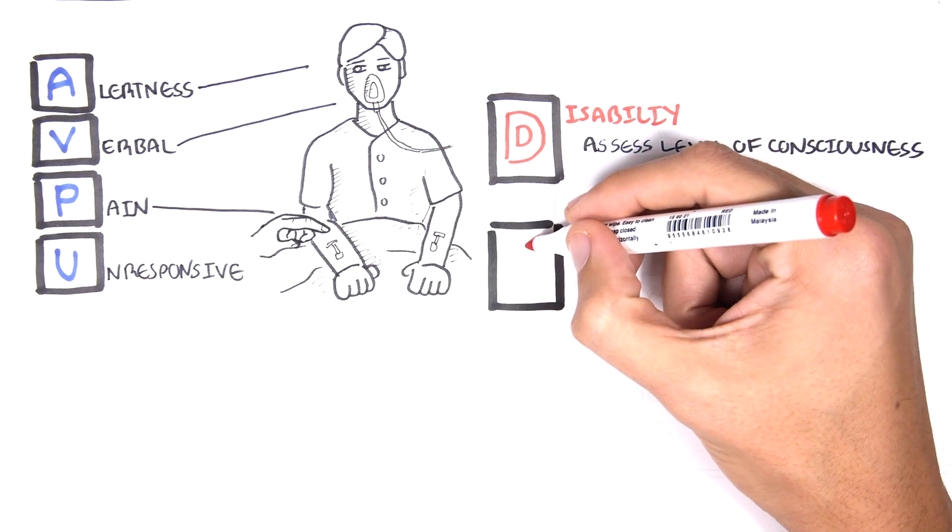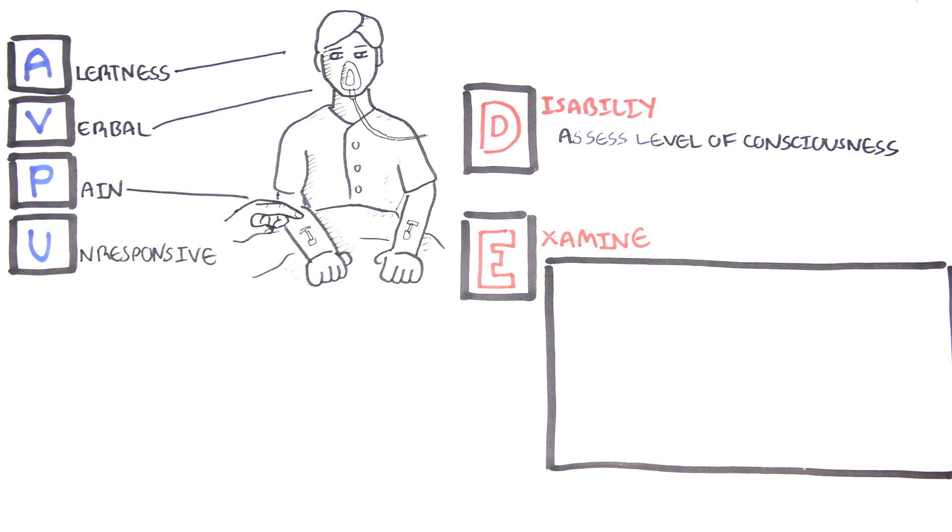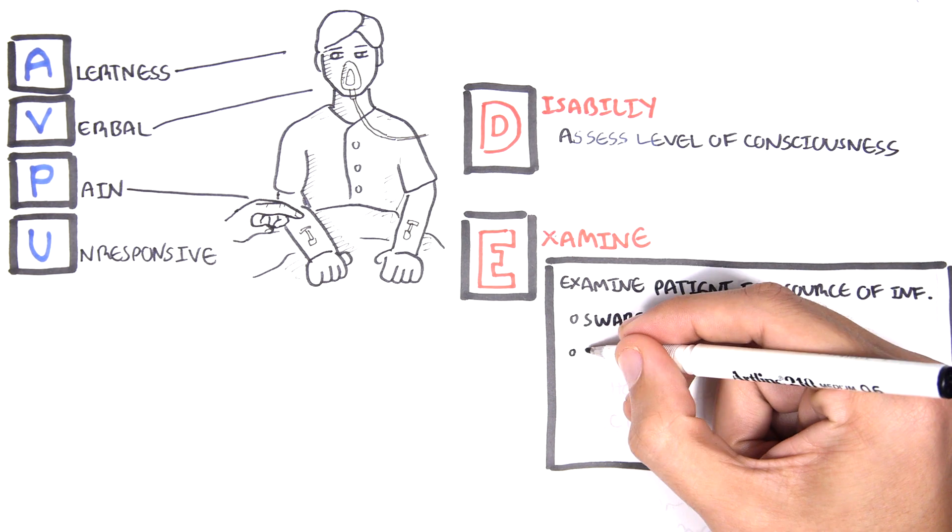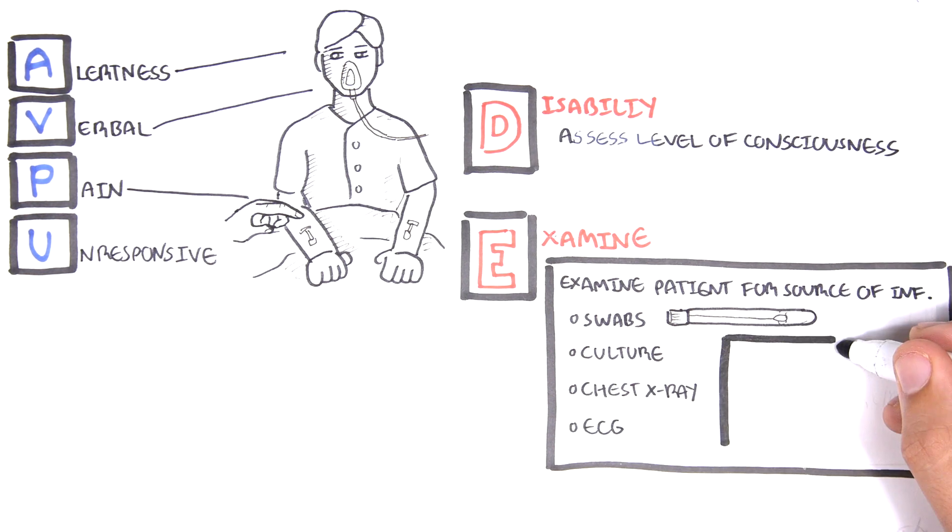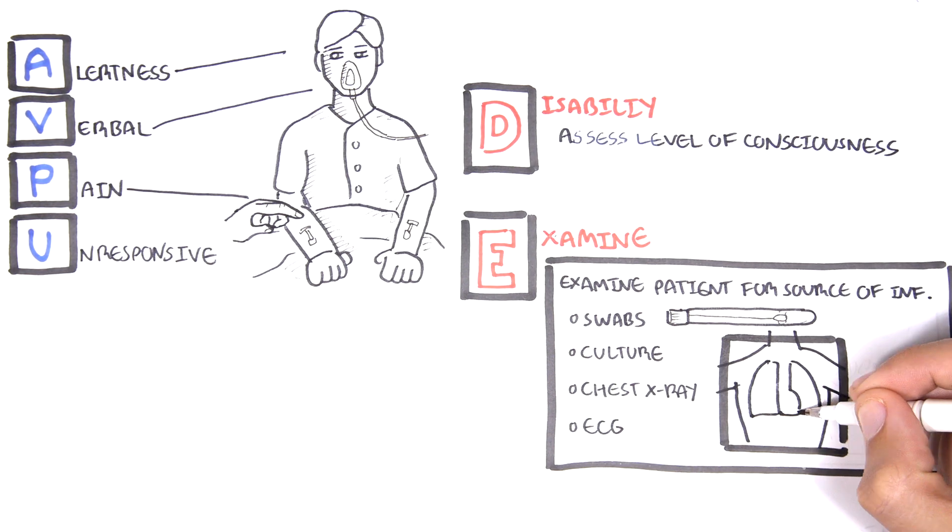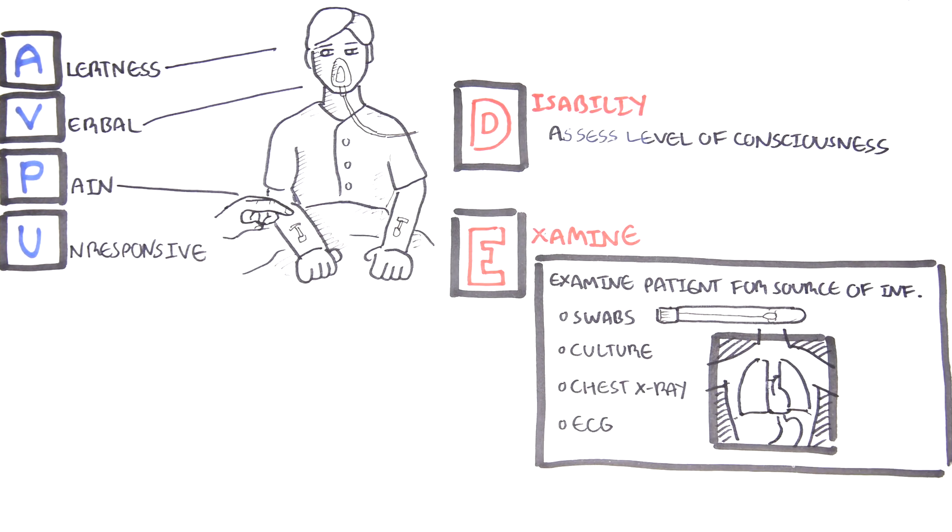E is examine or exposure. Examine the patient for source of infection. This may depend on what they presented with in the first place, for example, a lung infection or a UTI. Take a swab. Culture the swab. Perform a chest x-ray if pneumonia or lung infection is suspected. ECG for possible heart involvement. Check the skin for signs of rash or wound infections.